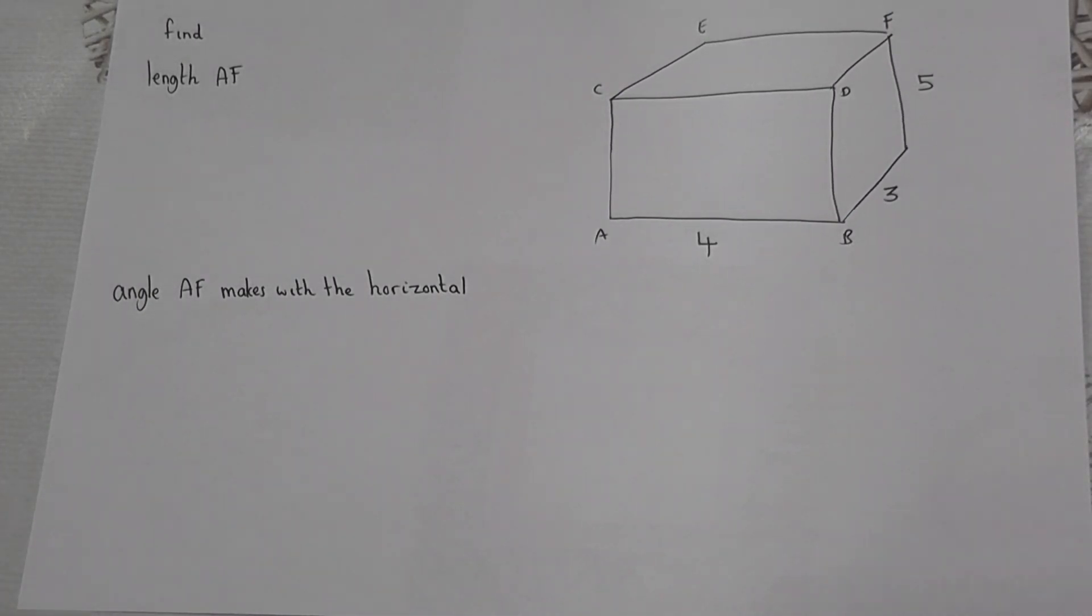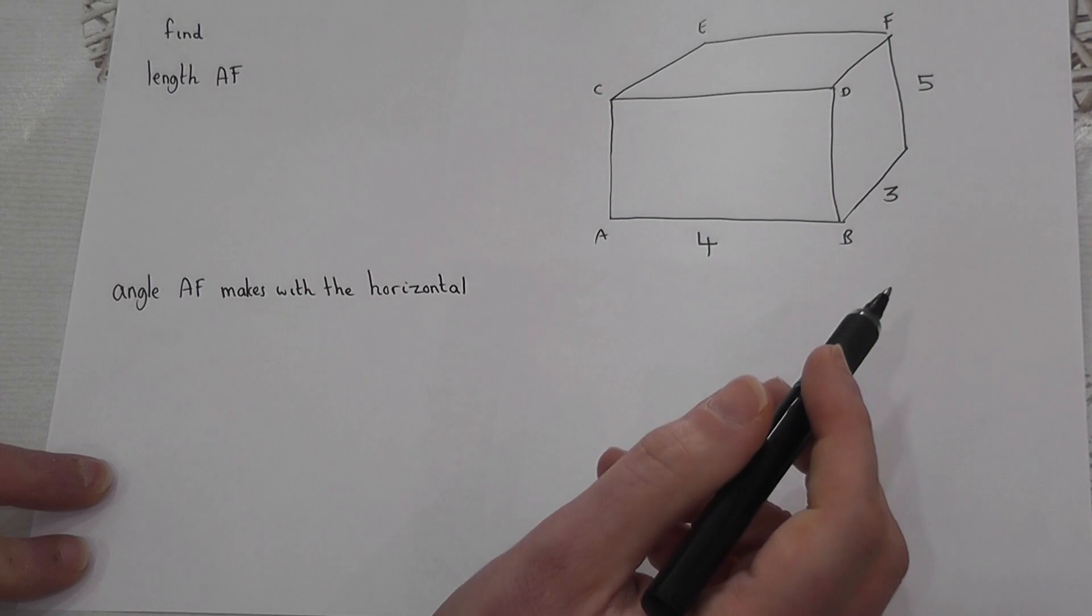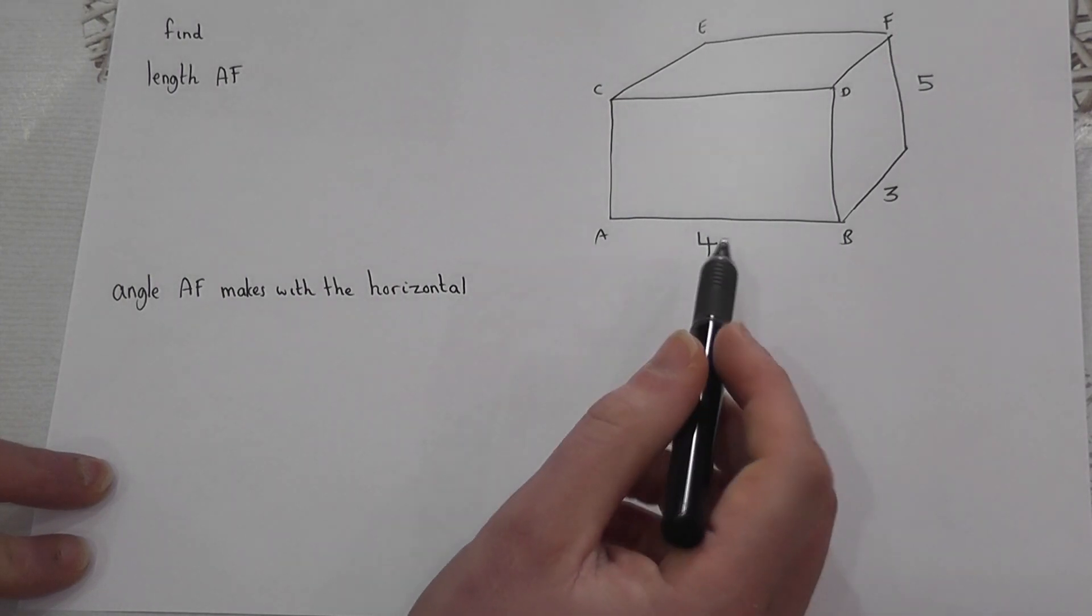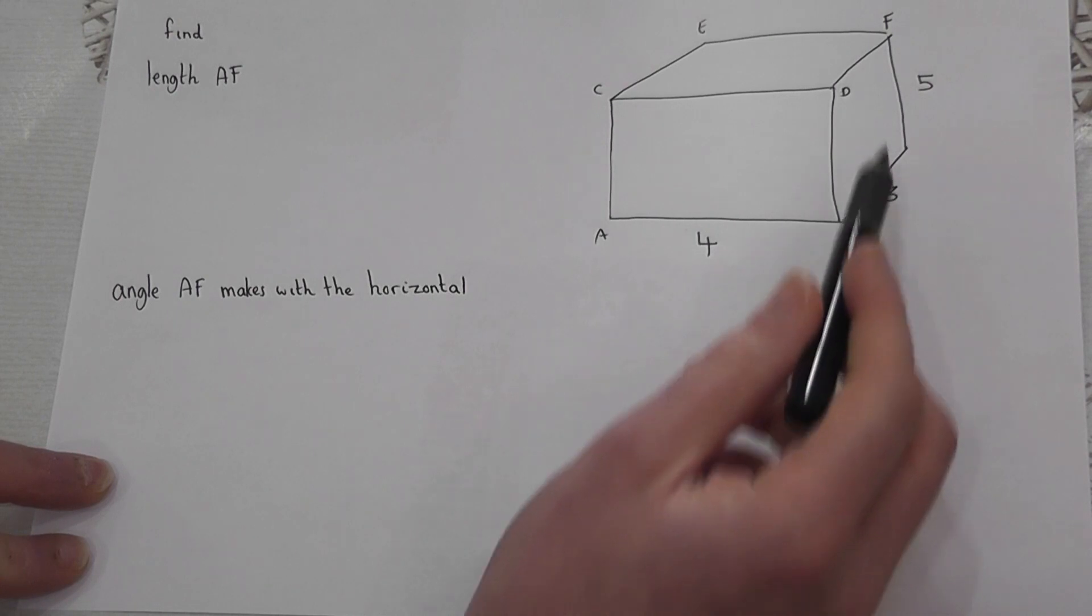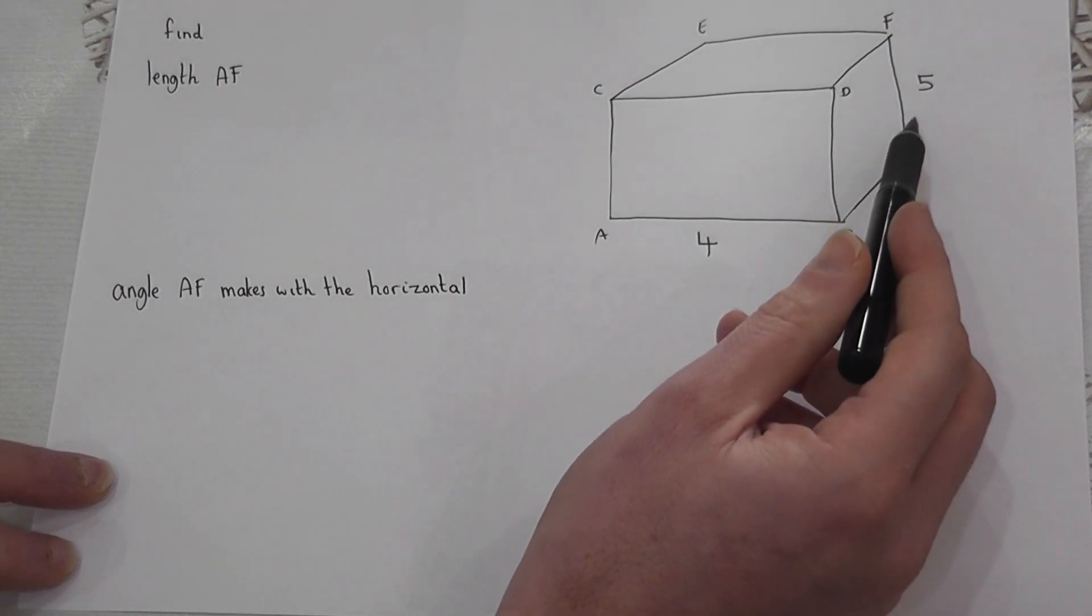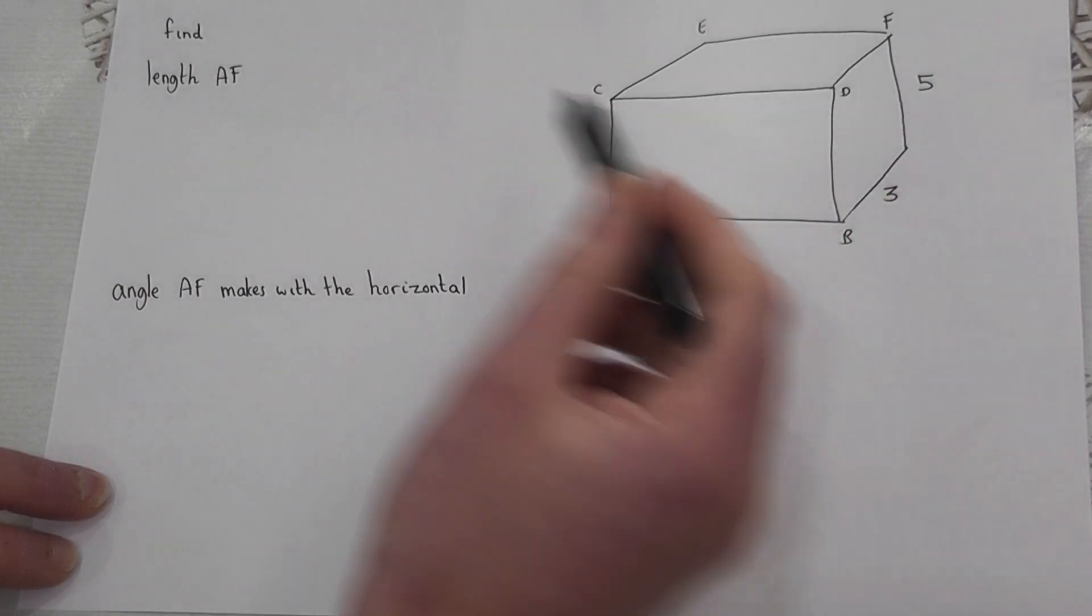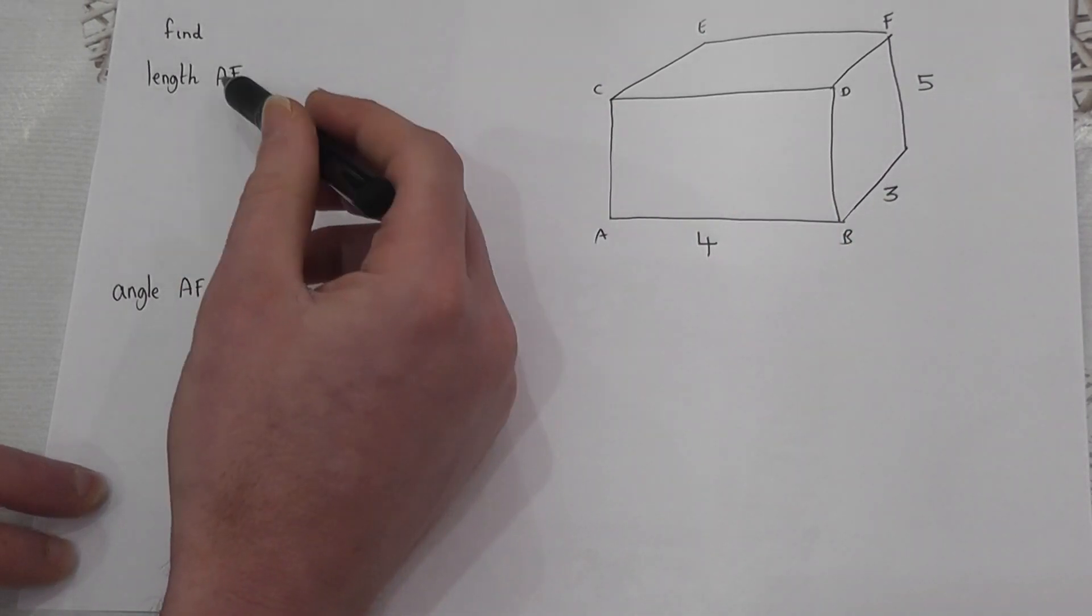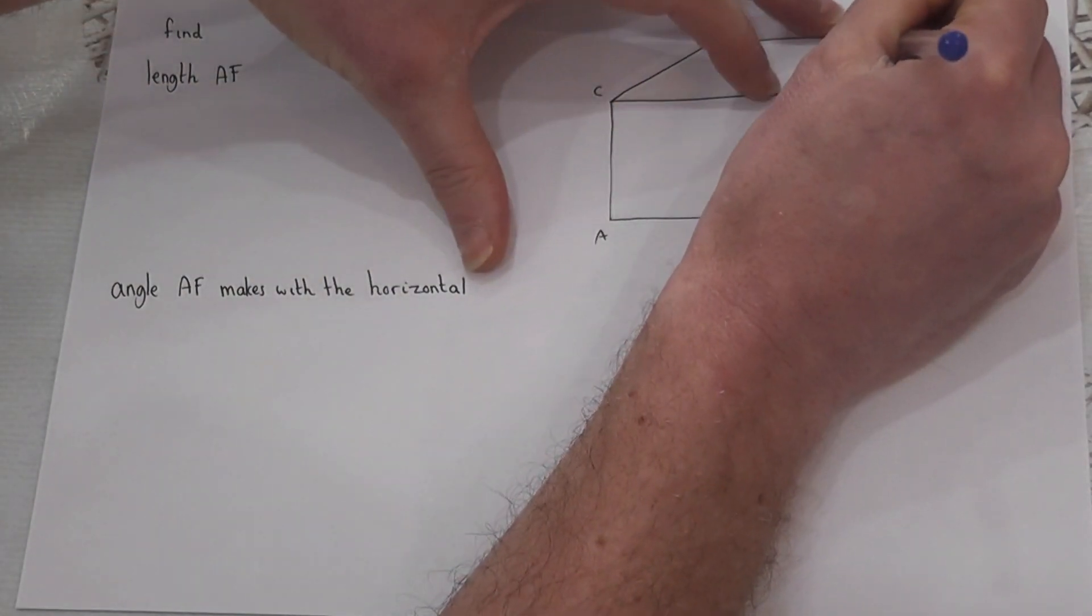This video reviews a couple of key tricks involving 3D shapes and 3D trigonometry. We've got a cuboid here with the lengths 4, 3, and 5. The first trick is how to find the length within a cuboid. This asks for the length from A to F, so the question is wanting this length down here.